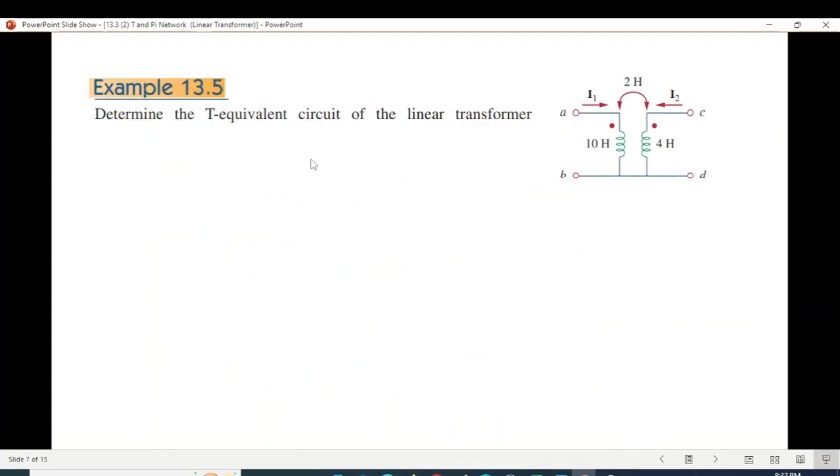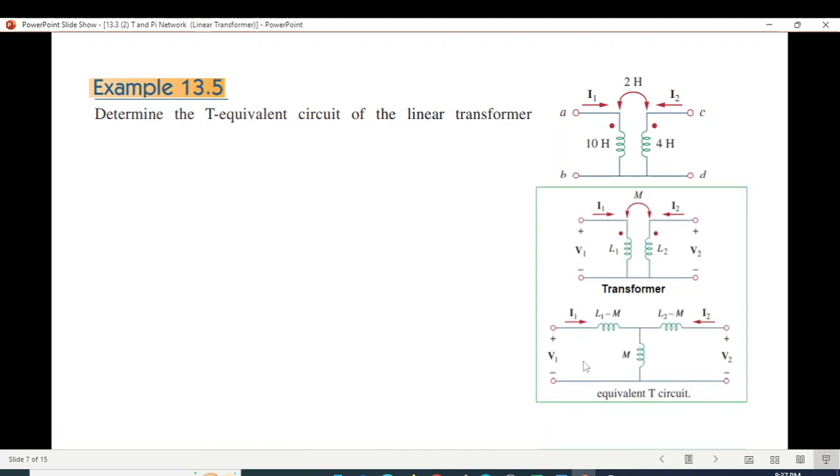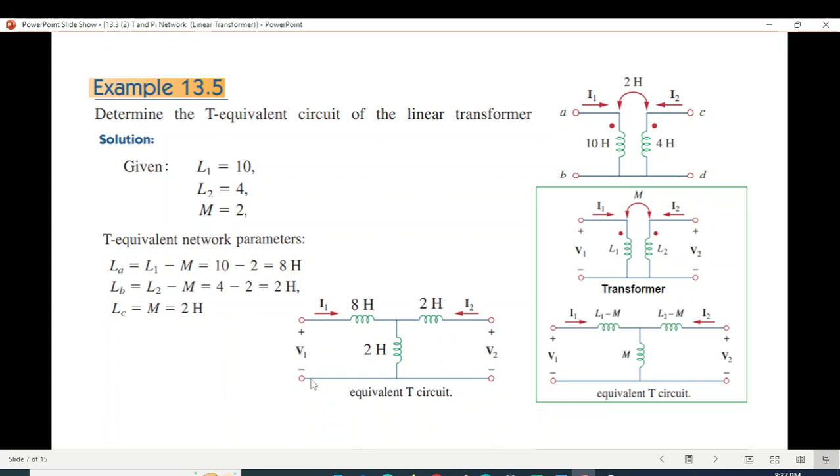Okay, now let's discuss example 13.5 from the book. This is the circuit. These parameters are given: L1, L2, and M. And we have to find the T equivalent circuit. So L1, L2, and M we write from here. Putting in the formulas that we derived for La, Lb, Lc. So our new circuit or the equivalent circuit will be like this. We write the value of La, Lb, and Lc.